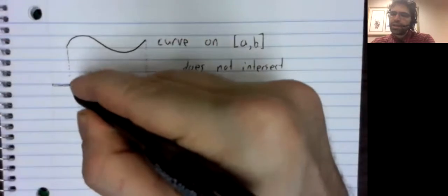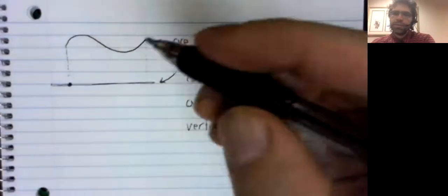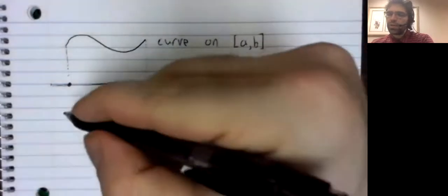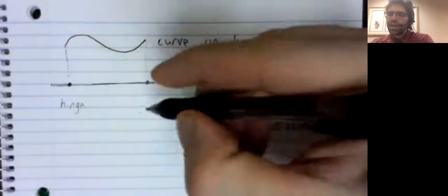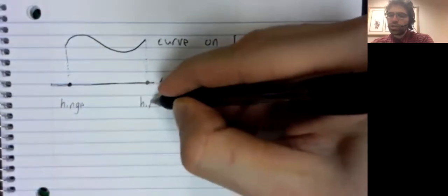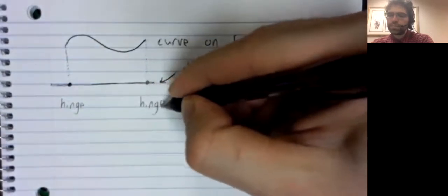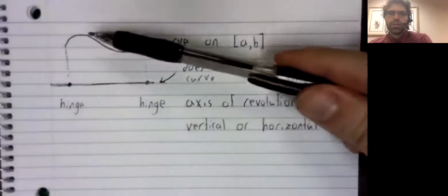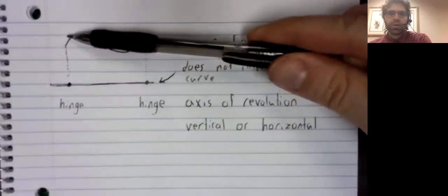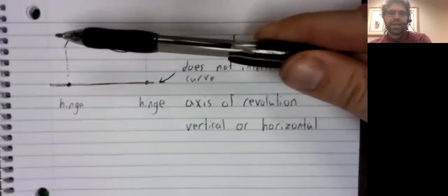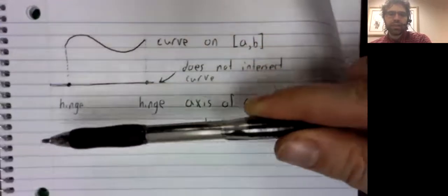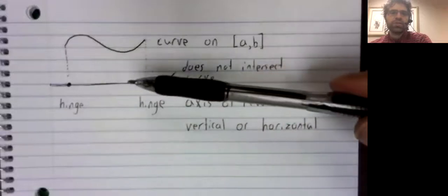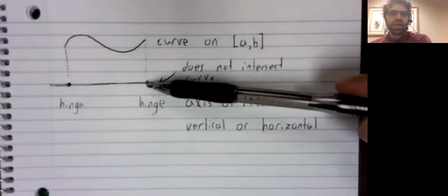And a piece of wire there, and a piece of wire there. And here, and here, we'll put a hinge. So, we can take this curve and we can lift it up and rotate it around. The hinges allow us to do that.